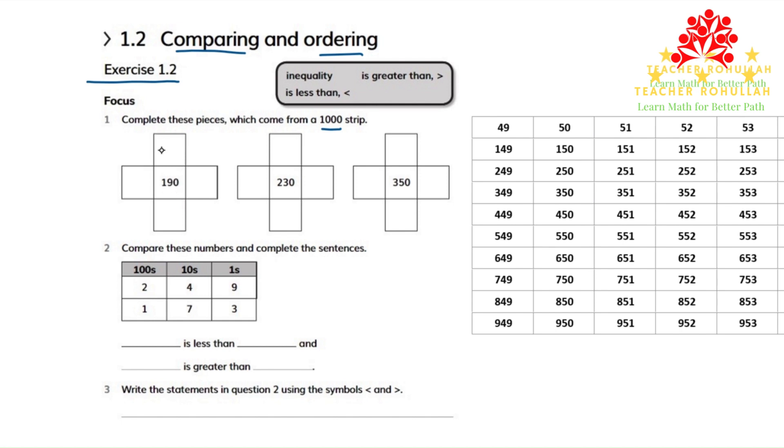So the number that comes above 190 is 90, and the number that comes below 190 is 290. And the number to the left of it is 189, and the number to the right is 191.